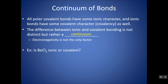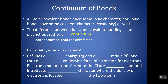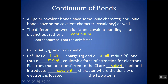Electronegativity is not the only factor. For example, BeCl2 — you'd see that Be is a metal and Cl is a non-metal, and at first glance you'd probably think this is ionic. But in fact, it is covalent. Be2+ has a really high charge and a small radius — only two shells — so there's a really strong Coulombic force of attraction for electrons. Any electrons it would transfer to the Cl minuses are actually pulled back, which introduces covalent character, and it ends up sharing electrons rather than fully transferring them to the Cl. So BeCl2 is, in fact, covalent.